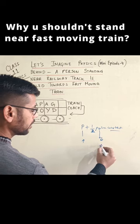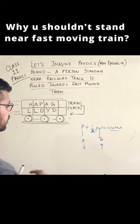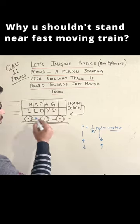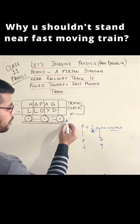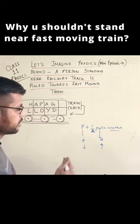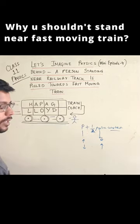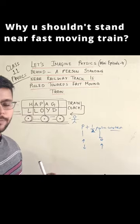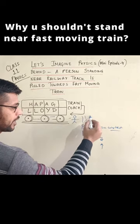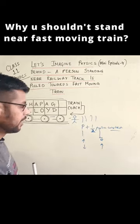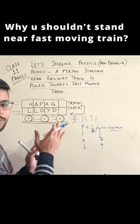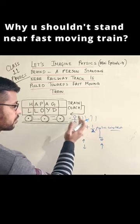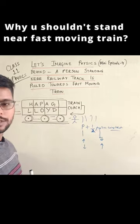When the train is fast-moving, the pressure near the train will be lower. If a person is standing near the train, the lower pressure will pull the person toward the train, because the train is fast-moving and the person will automatically push itself toward the train.